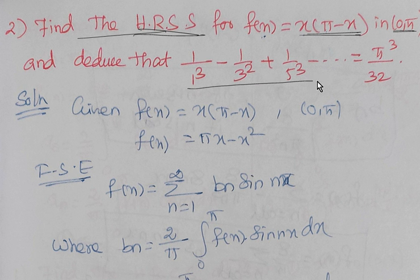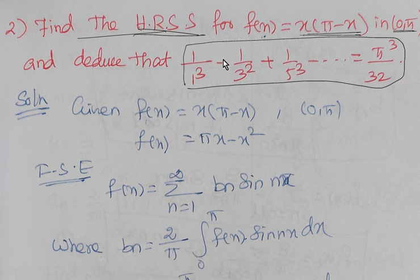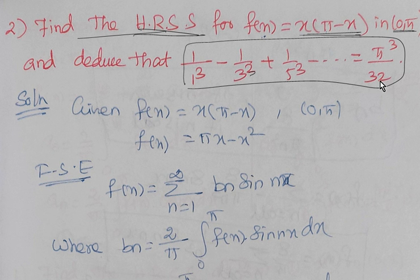Let's work out the result. The series is 1/1³ minus 1/3³ plus 1/5³ and so on — odd numbers cubed, with alternating plus or minus signs — and this is equal to π³/32. We need to prove it.